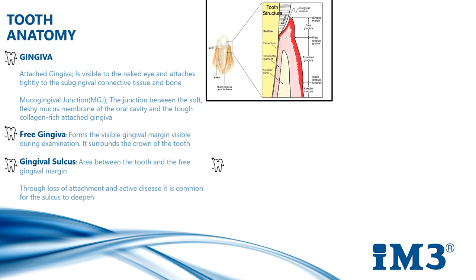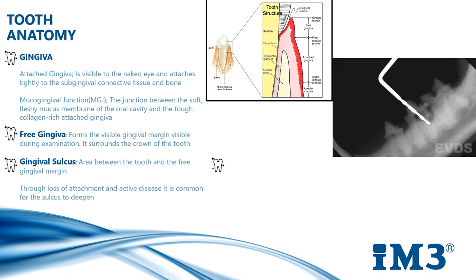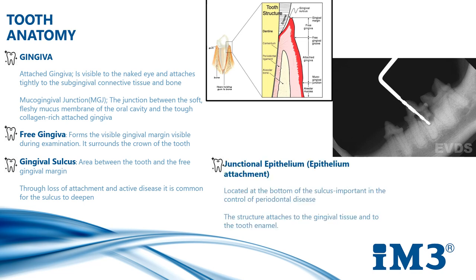Through loss of attachment and active disease, it's common for the sulcus to deepen. The junctional epithelium becomes inflamed and parts from the root surface. Junctional epithelium is located at the bottom of the sulcus and is important in the control of periodontal disease. The structure attaches to the gingival tissue and to the tooth enamel. Through inflammatory swelling, the junctional epithelium is pulled away from the tooth, causing the sulcus to deepen. A pocket will then form, causing pathogens to come into contact with deeper structures, primarily bone and periodontal ligament.